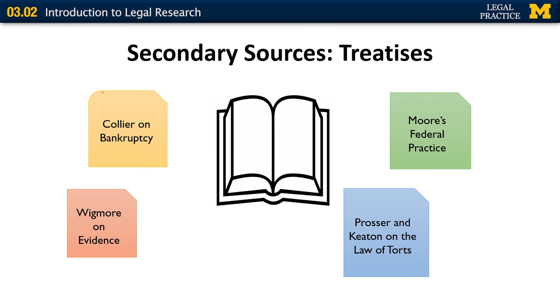A second common type of secondary source is a treatise. A treatise is just a fancy word for a book. Legal treatises are single volumes or multi-volume sets of books on a particular area of the law, such as torts, bankruptcy, or civil procedure. They are incredibly useful in giving you background and context for the legal issue that you are about to research.